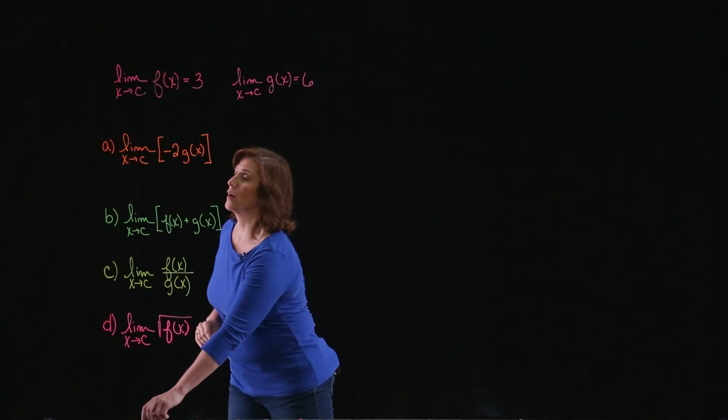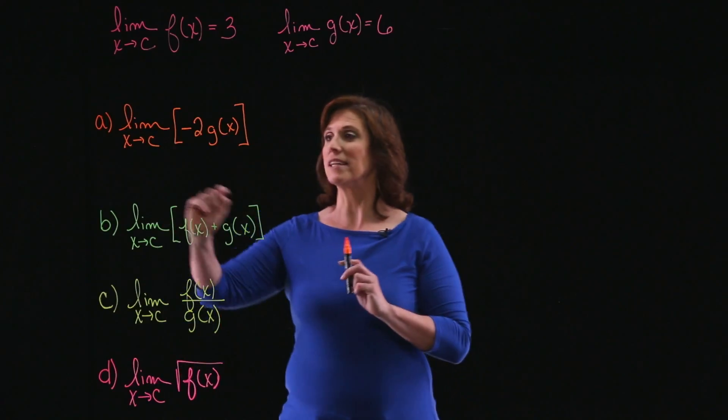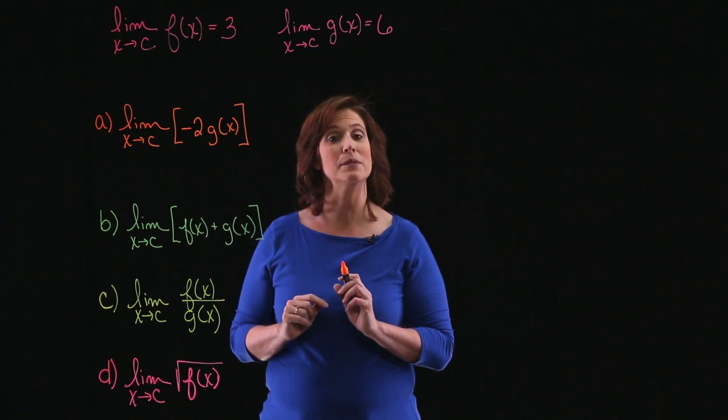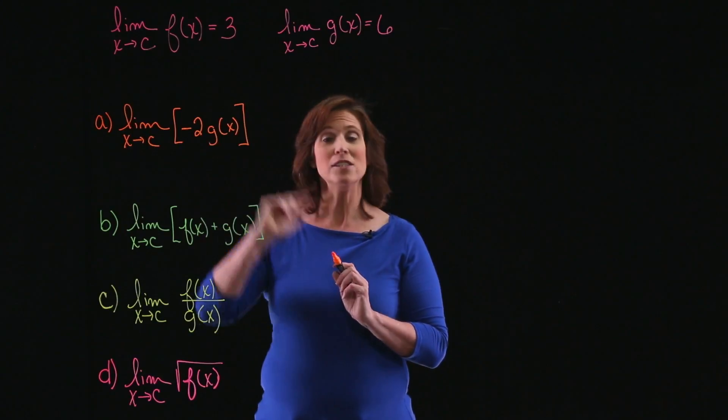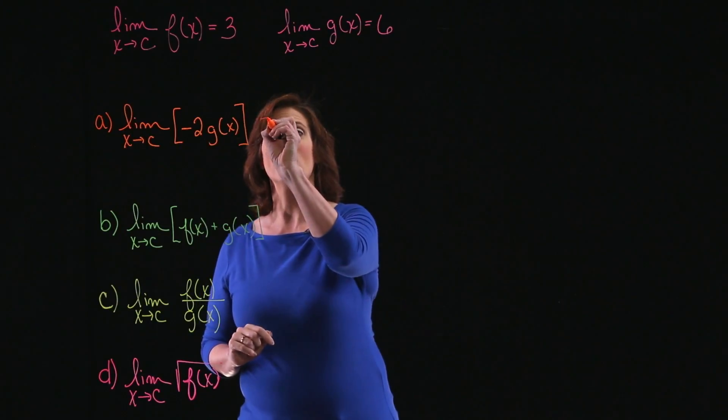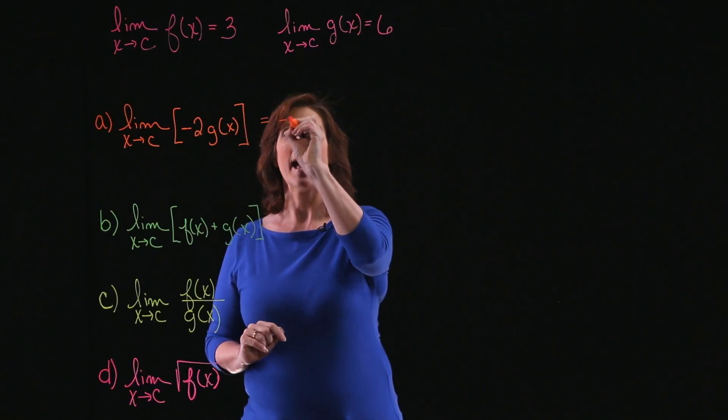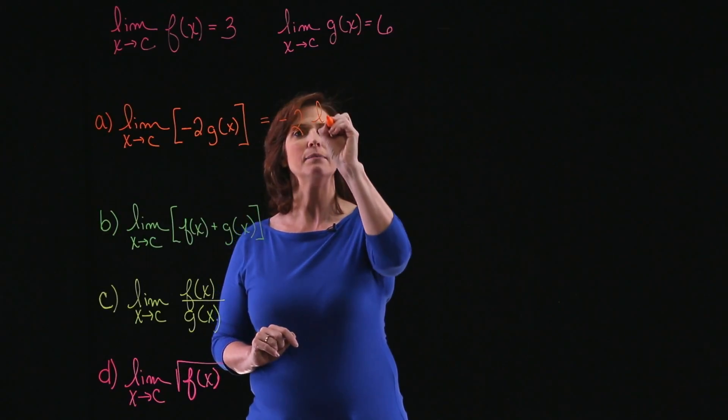So let's begin with the first one. I'm interested in the limit as x approaches c of minus 2 times my function g of x. Minus 2 is a constant multiple.